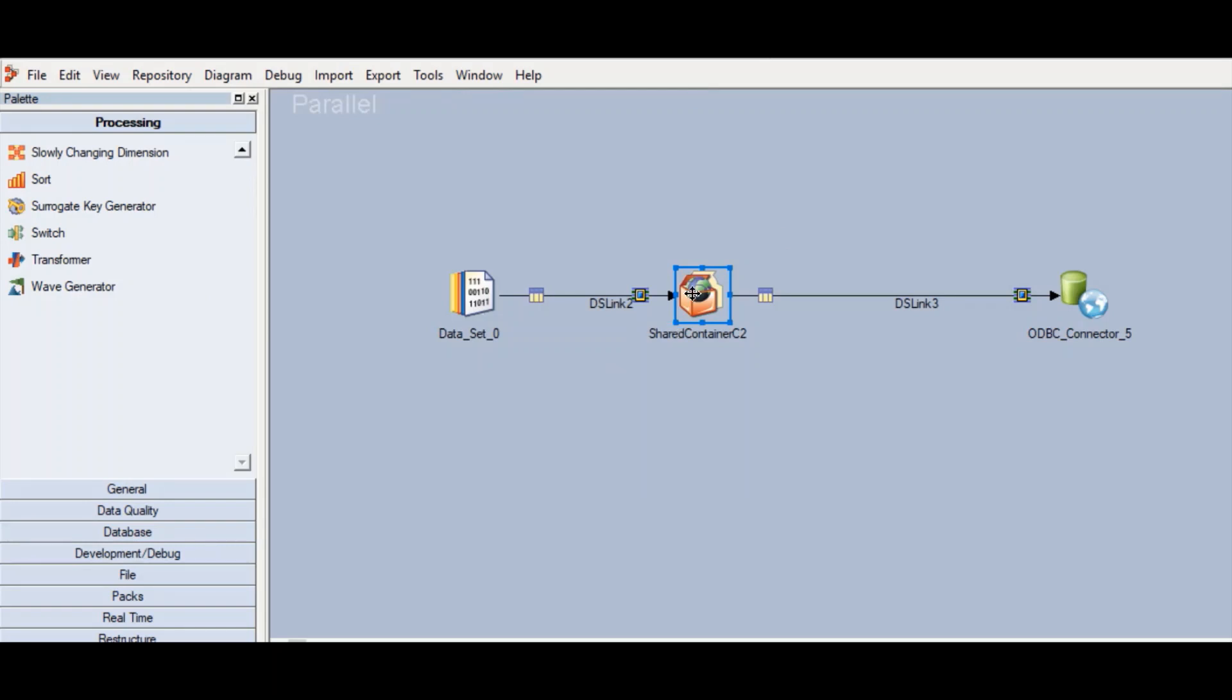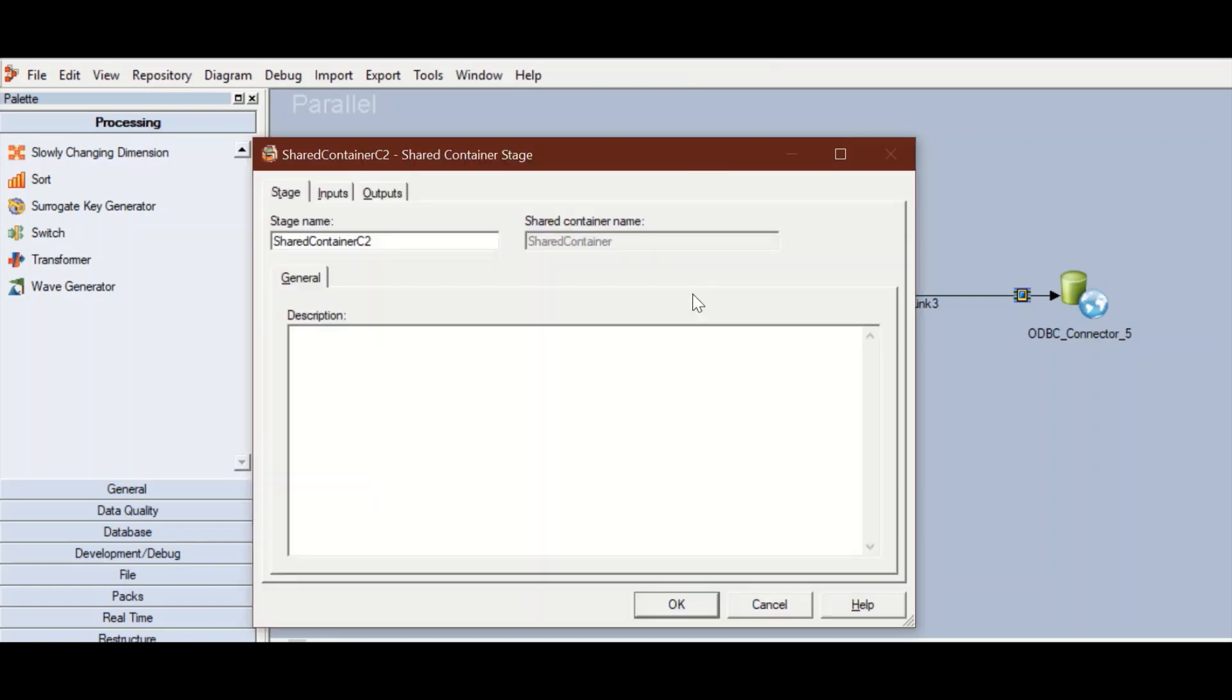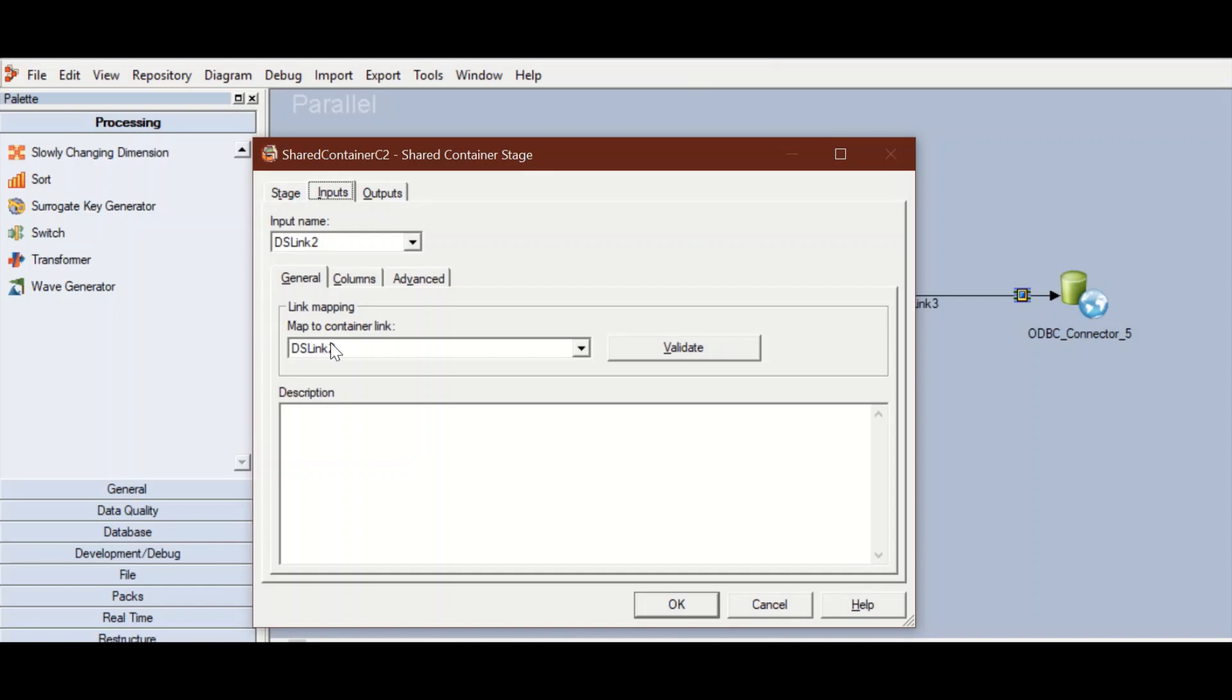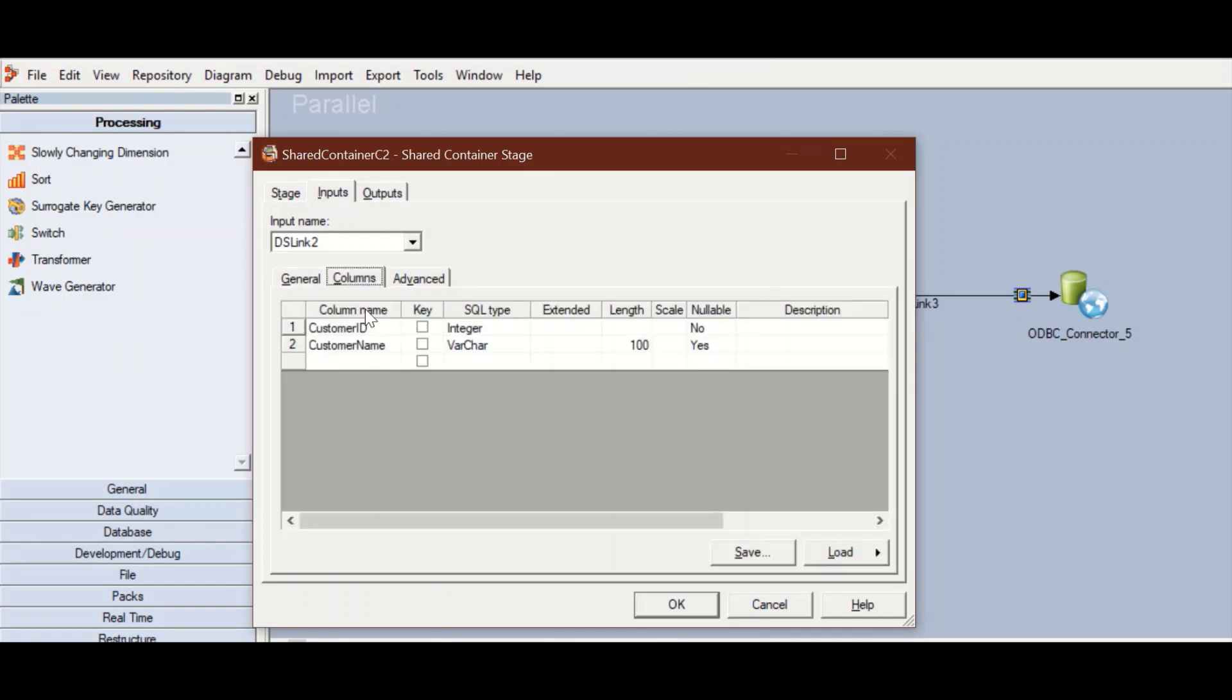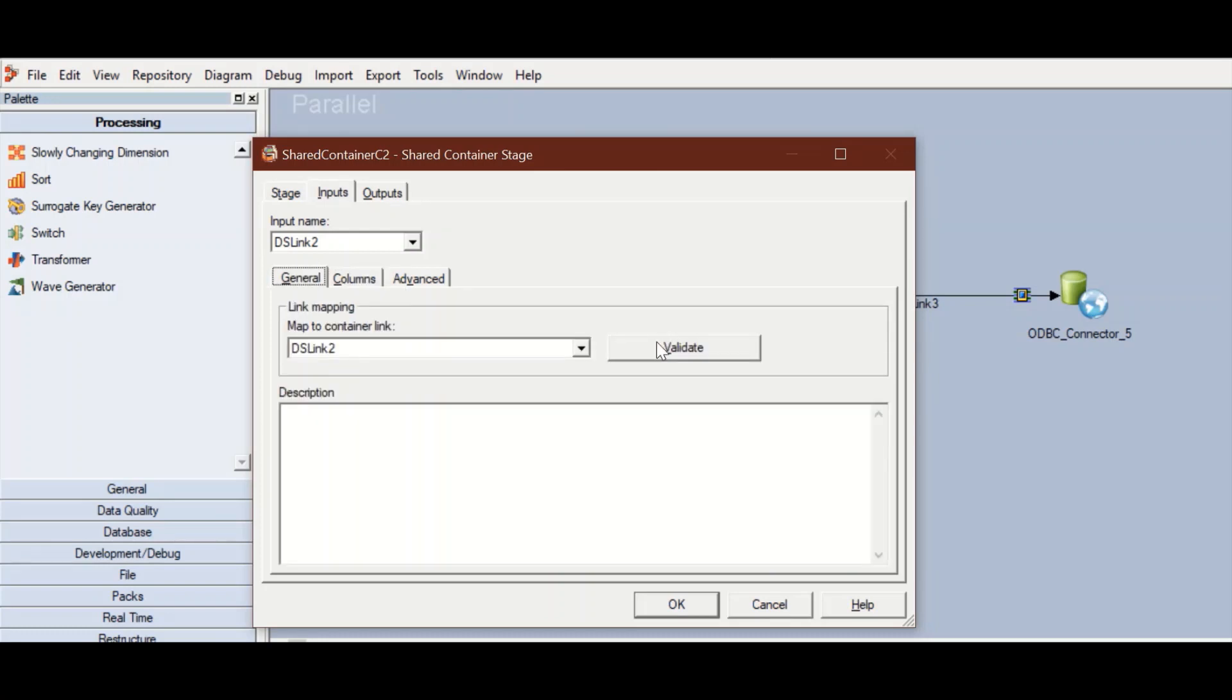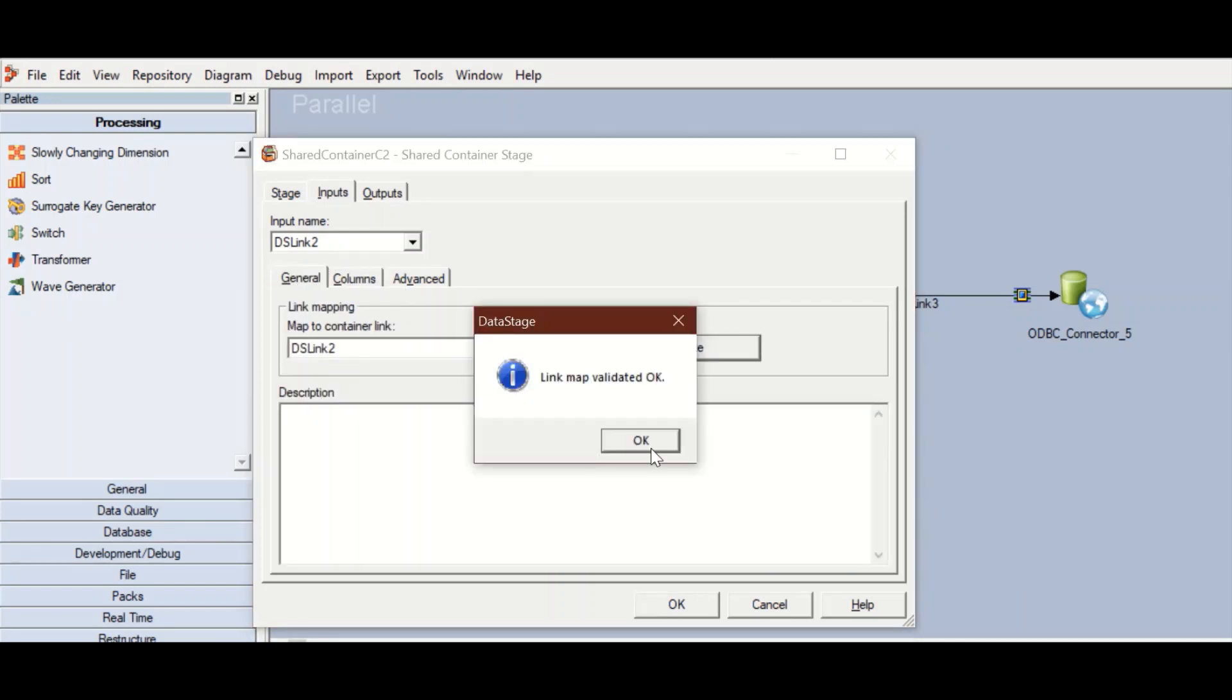Once this is converted to a shared container, this is how it looks. You can just double-click on the shared container and access its properties. You will see that there are two tabs: Inputs and Outputs. Input just shows the link it is mapped to. You can check the columns that are there and you also have the option to validate the link.